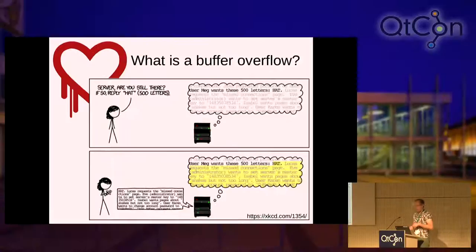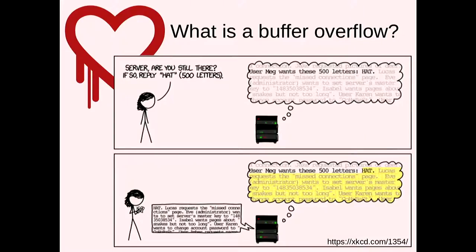What's a buffer overflow? We had a very famous one a while back called Heartbleed. Here's a simple xkcd explanation: somebody asks the server 'can you send me back the word hat?' and says by the way, hat is a 500-letter word. Obviously hat is not a 500-letter word, but because the server didn't check that hat was really only three letters, it sent 500 letters from a different space in memory. The person talking to the server could actually read chunks of memory out of the server very easily — a huge bug because of handwritten IO code.